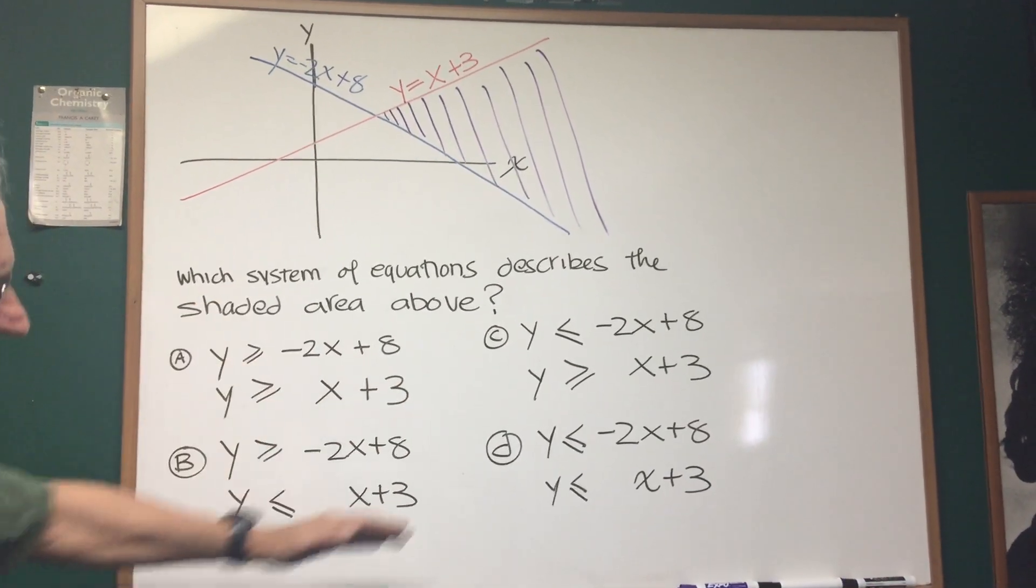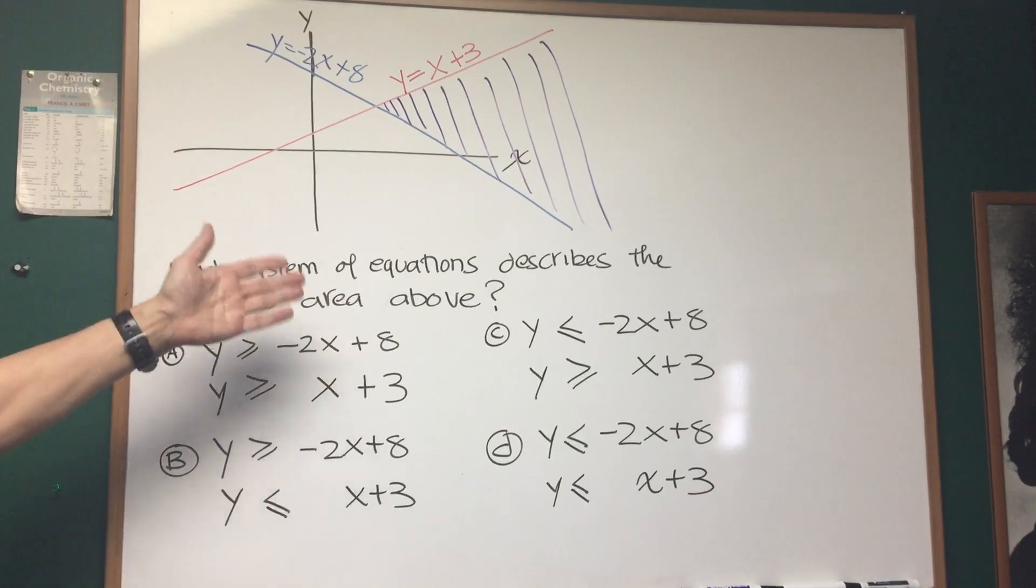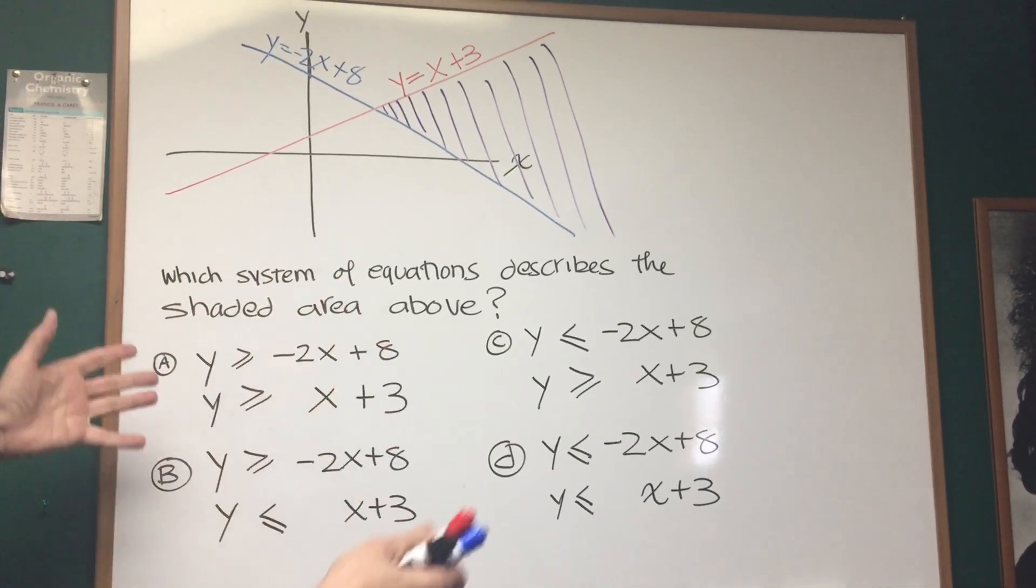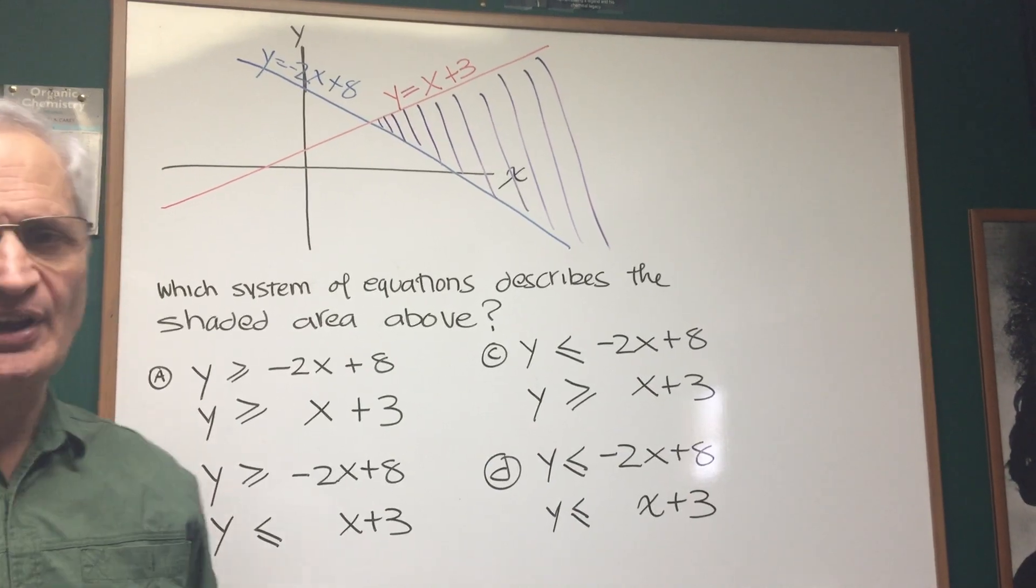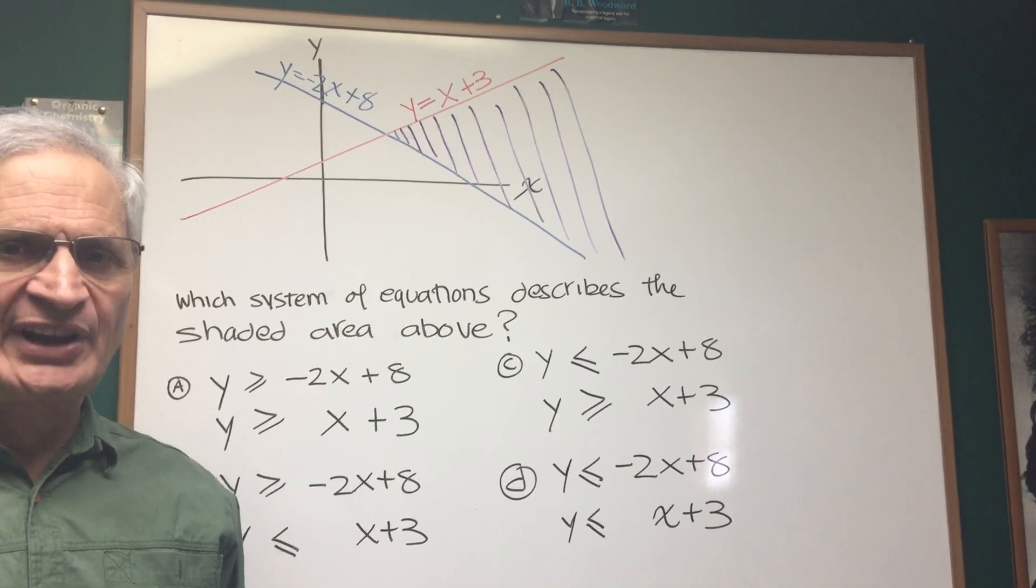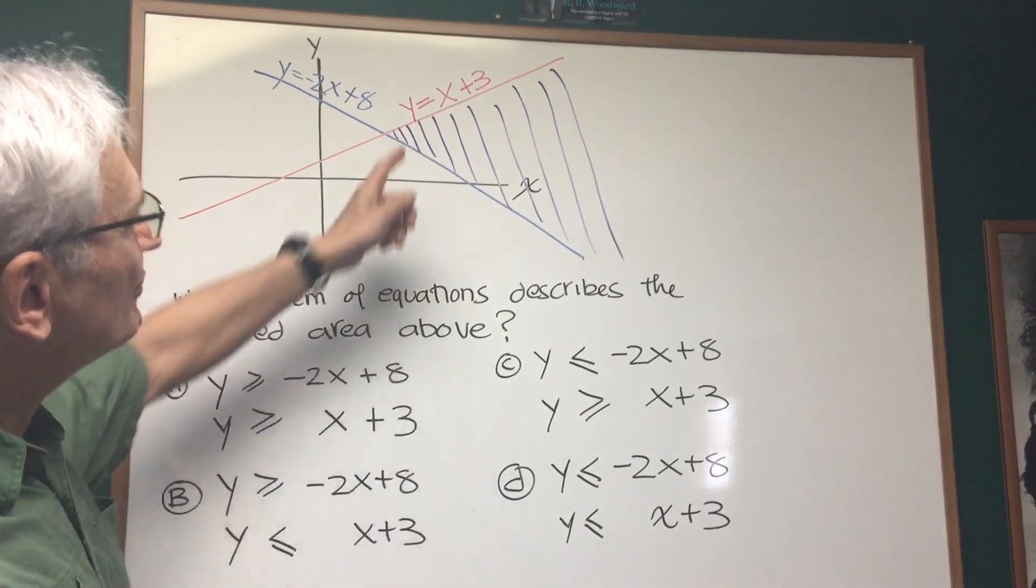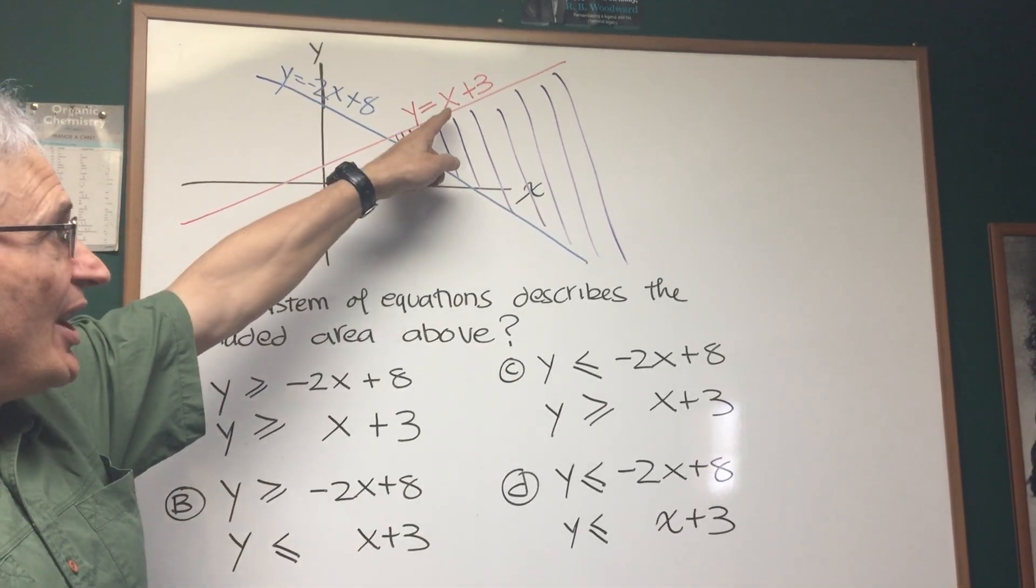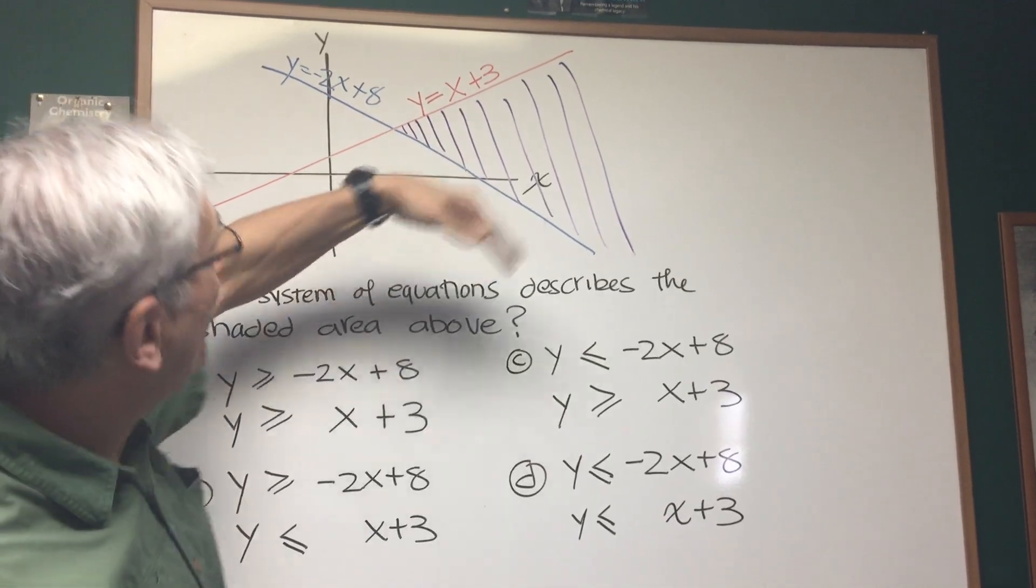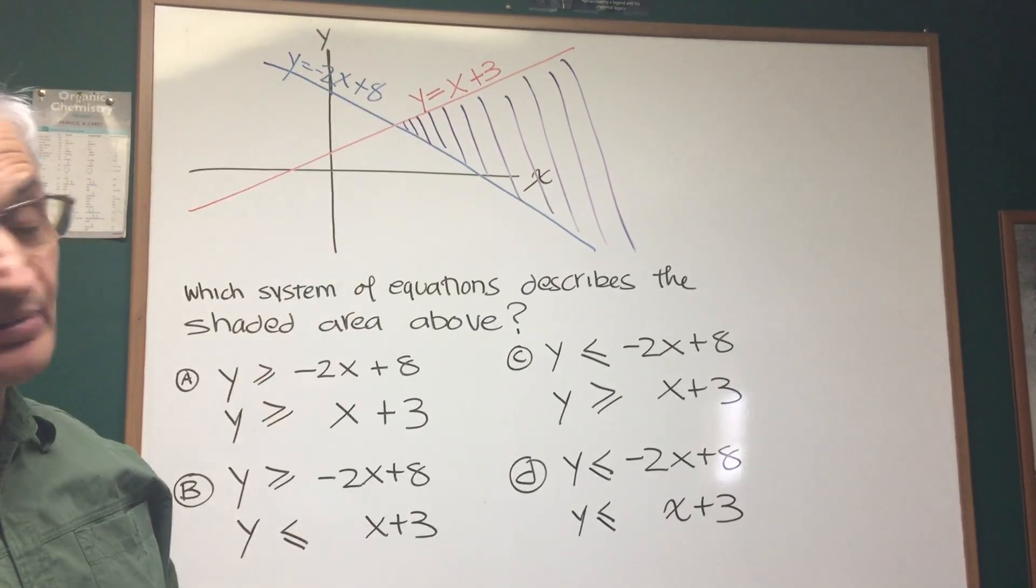Now, which one of these choices is going to adequately describe, is going to precisely describe the shaded area? Well, look what's happening in the shaded area. This, and this question can be answered purely in visual terms. The shaded area falls below the line x plus 3 and above the line negative 2x plus 8.